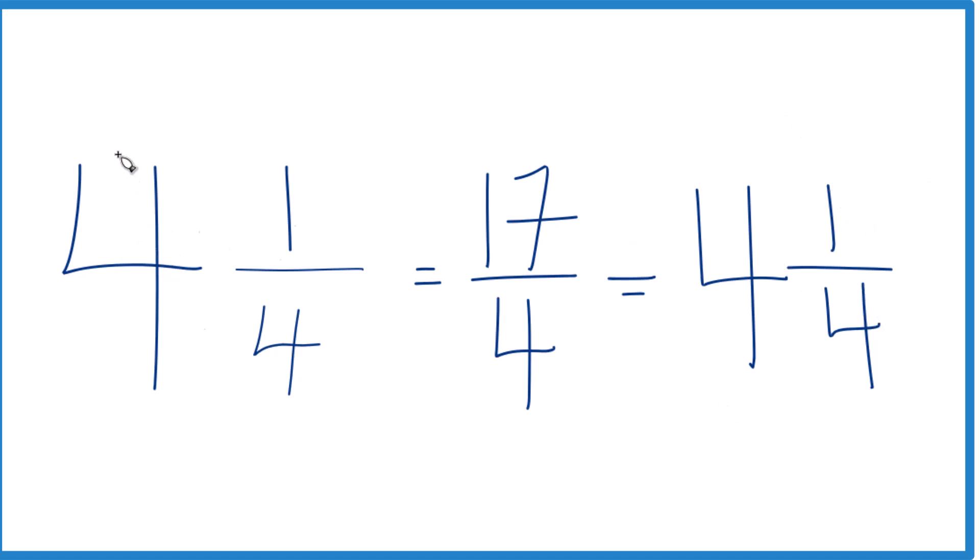So, in answer to our question, 4 and 1/4, the mixed number there, that equals the improper fraction, 17/4. It's improper because the numerator is larger than the denominator.